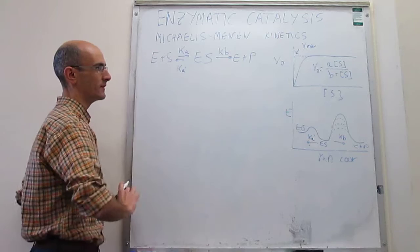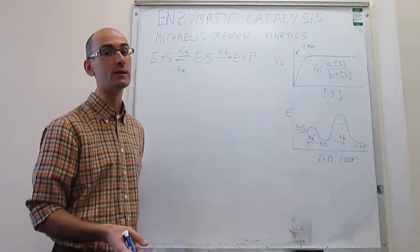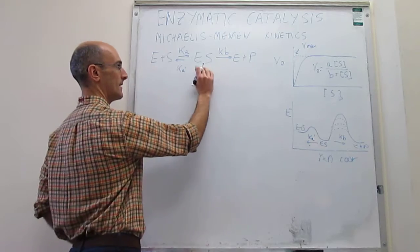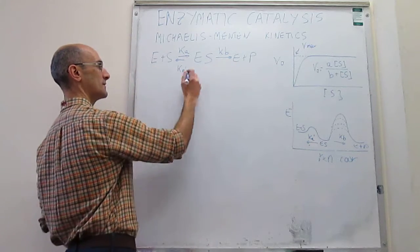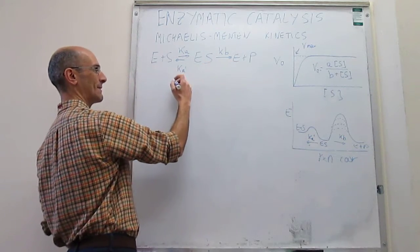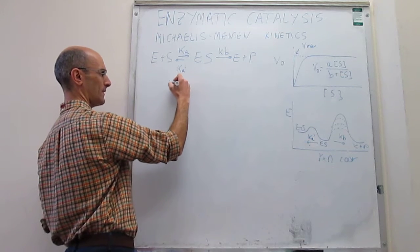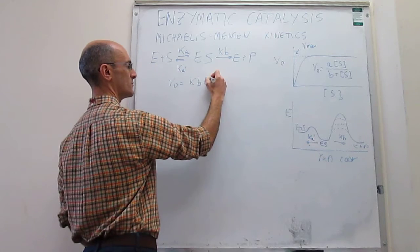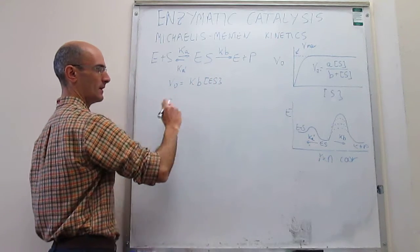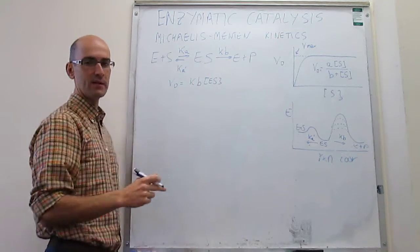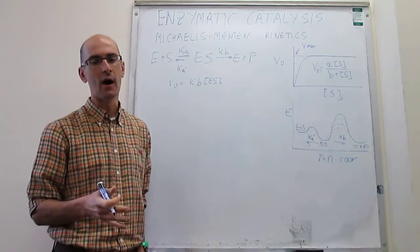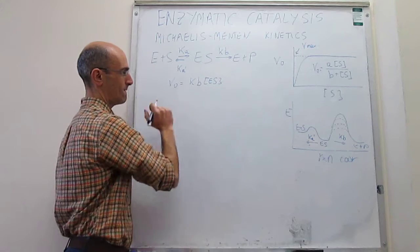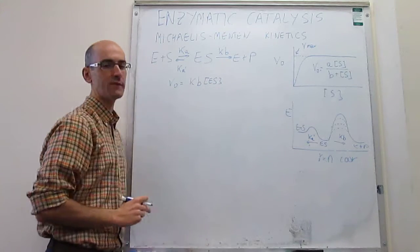Let's see how we can solve this reaction mechanism and find the rate law with the steady-state approximation. The rate law is simply the rate law of the step that forms products, which is equal to k_B times the concentration of the intermediate ES. The problem is that ES is an intermediate and we cannot have it in the final rate law.